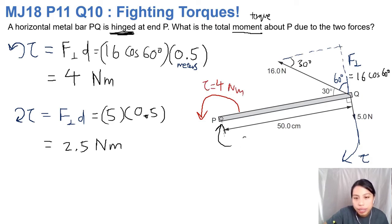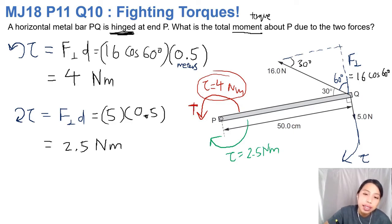So you're going to have clockwise torque of four newton meters, and then you have anti-clockwise torque total is 2.5 newton meters. Who's going to win? Of course the bigger one. So bigger torque is going to win. Since that's the bigger one, let's say anti-clockwise is positive and clockwise is negative.